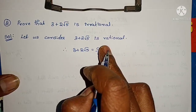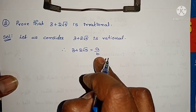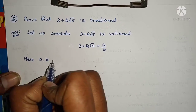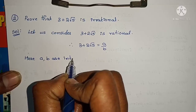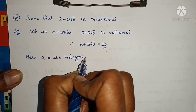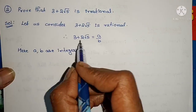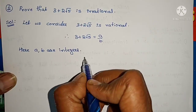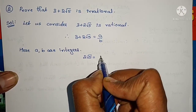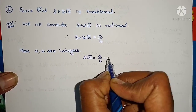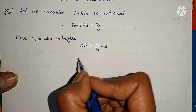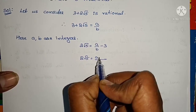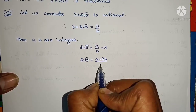Any rational number can be written in the form p by q, so I am considering a by b, where a and b are integers. Now sending 3 to the other side: 2√5 = a/b − 3. Taking LCM: 2√5 = (a − 3b) / b.